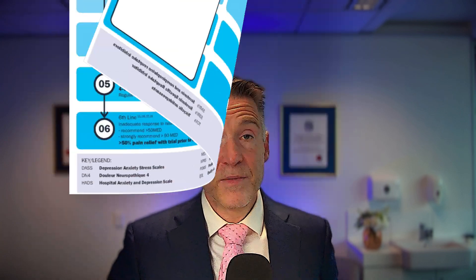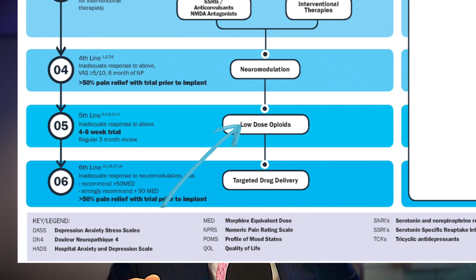If neuromodulation fails, because sometimes pain is like that, then step five might include consideration for low-dose opioid therapy. There are many things to discuss in terms of opioids — there are lectures for GPs on opioids available below. Ask questions about these medications so we can work out videos to provide you with answers.